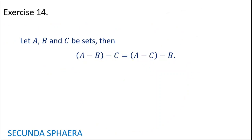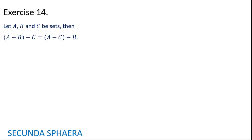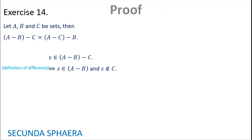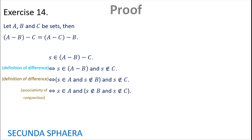Moving to exercise 14: let A, B, and C be sets. Then A without B without C is equal to A without C without B. This is an equality of sets proven by equivalences. Starting with S in A without B without C, using the definition of difference gives S is in A without B and S is not in C, and again using difference gives S is in A and S is not in B and S is not in C. Using associativity of conjunction gives S is in A and S is not in B and S is not in C.